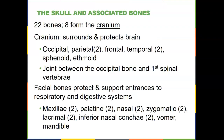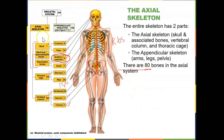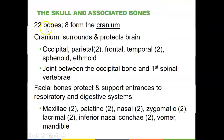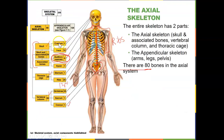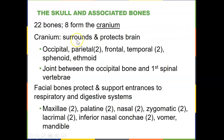We're going to start with the skull and associated bones. There are 22 bones: eight form the cranium, and 14 are facial bones. The cranium surrounds and protects the brain — also called the brain case. Cranial bones include: one occipital, two parietal, one frontal, two temporal, one sphenoid, and one ethmoid. The sphenoid and ethmoid are not easily visible — they're inside your skull.